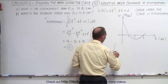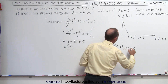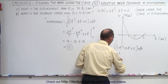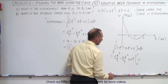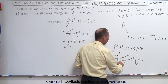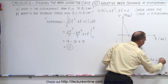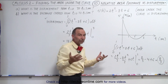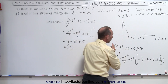First we integrate from 0 to 1: the integral of 2t² - 8t + 6 dt, which becomes 2t³/3 - 8t²/2 + 6t evaluated from 0 to 1. Plugging in the upper limit gives 2/3 - 4 + 6 = 8/3. So in the first 1 second, the object has covered a distance of 8/3 meters in the forward direction.